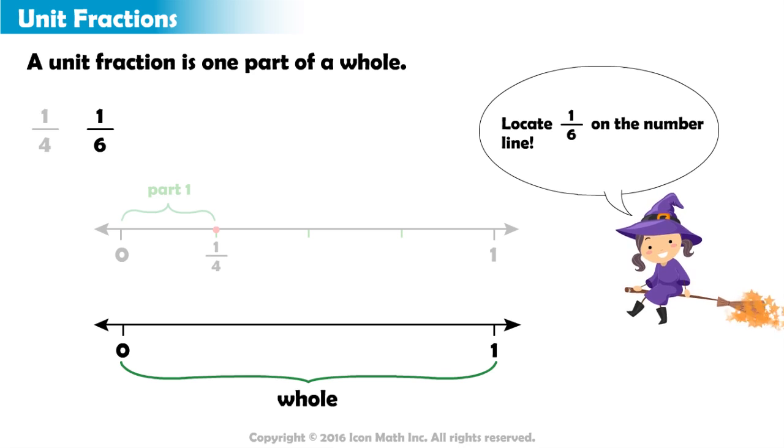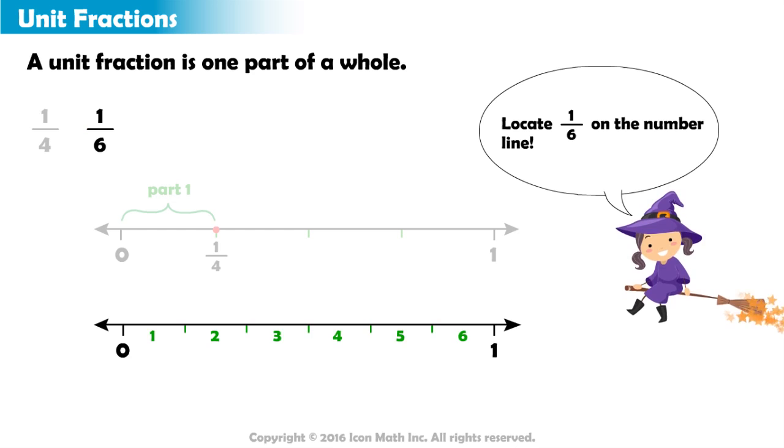The first step is to notice that the fraction one-sixth says that we have one out of six equal parts. So, we split our whole into six equal parts. Now, starting from the point zero, we move across to cover the length of exactly one part.